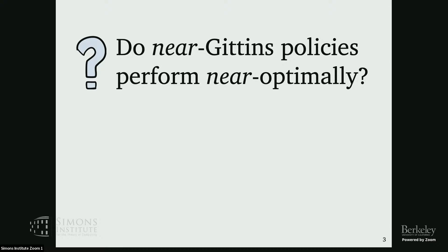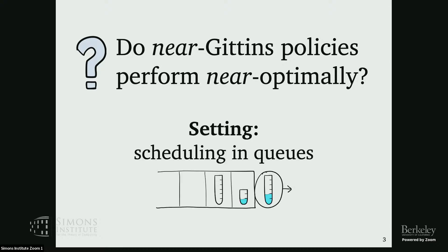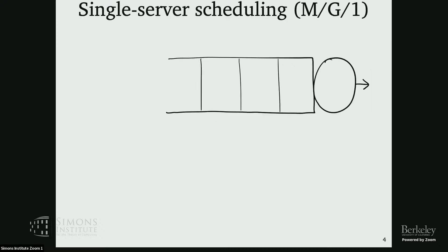As an example, I think of multi-server scheduling or multi-server multi-armed bandit as: if I'm pulling the two best arms, that's kind of like pulling the best arm twice as hard, roughly speaking. So that's kind of nearly Gittins-y — is that nearly optimal? In my thesis, I studied this question in the context of scheduling in queues. So let me tell you a bit about what scheduling in queues even looks like.